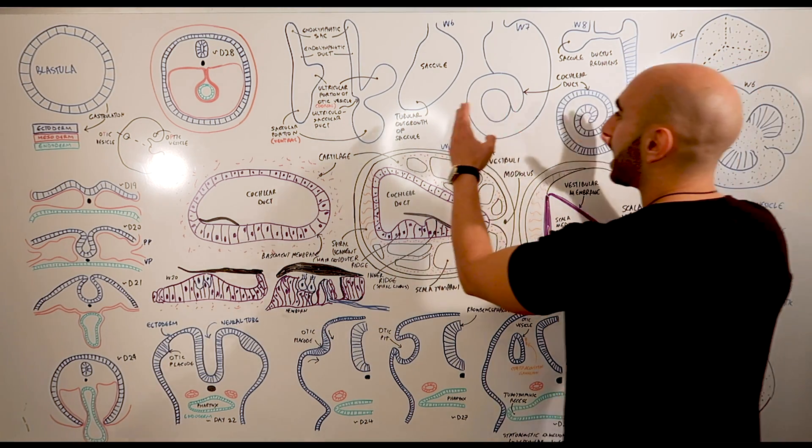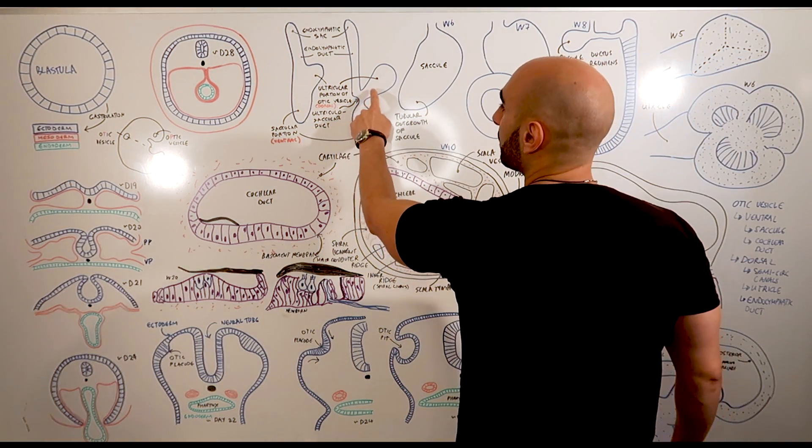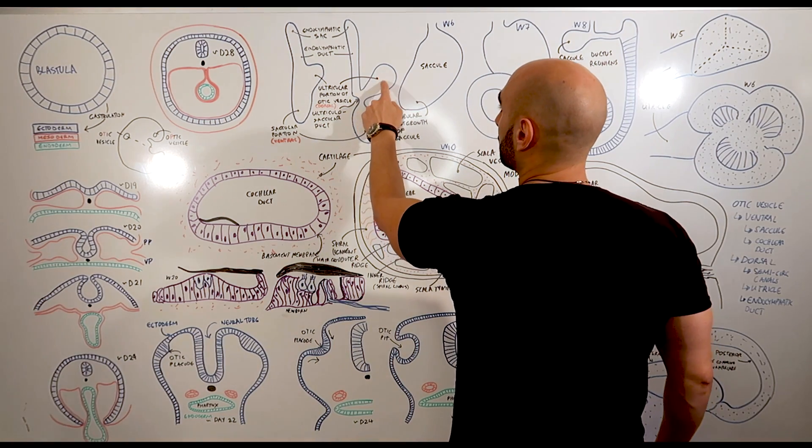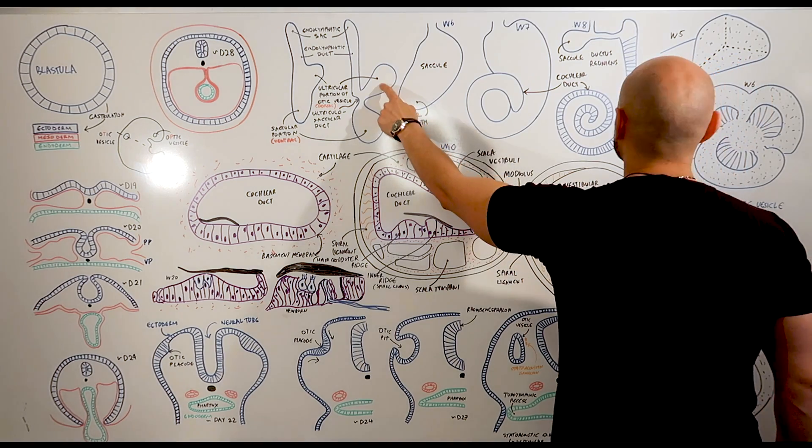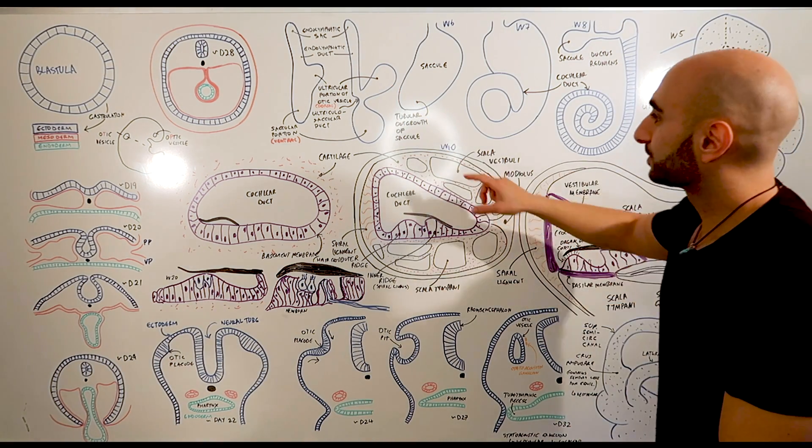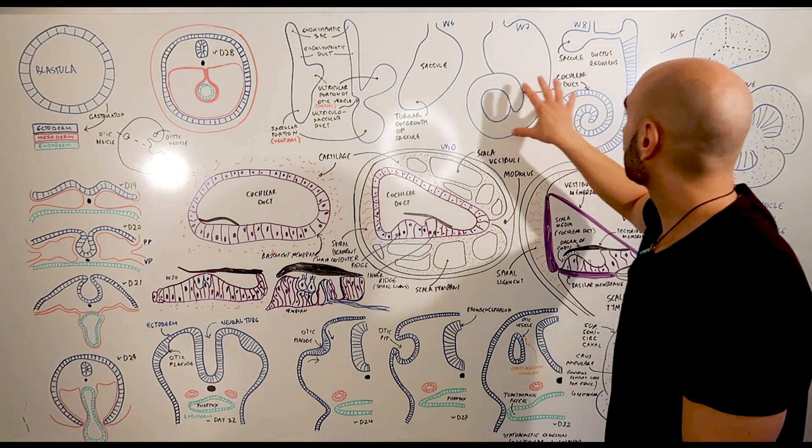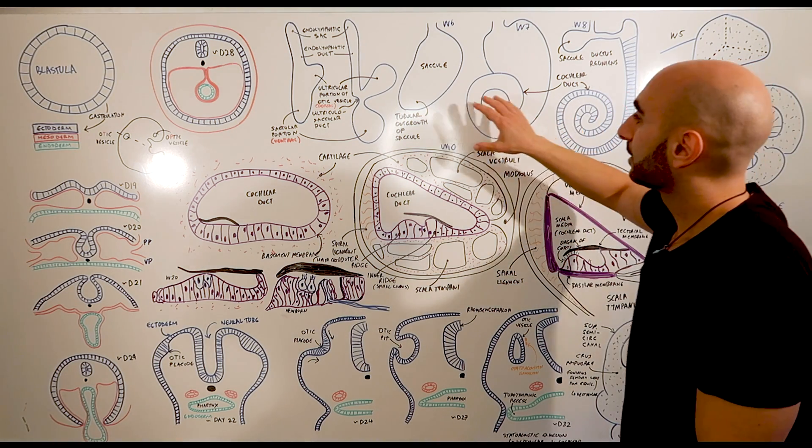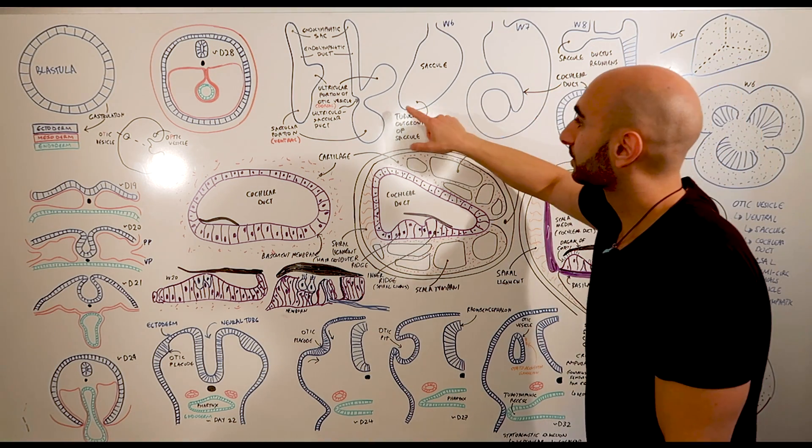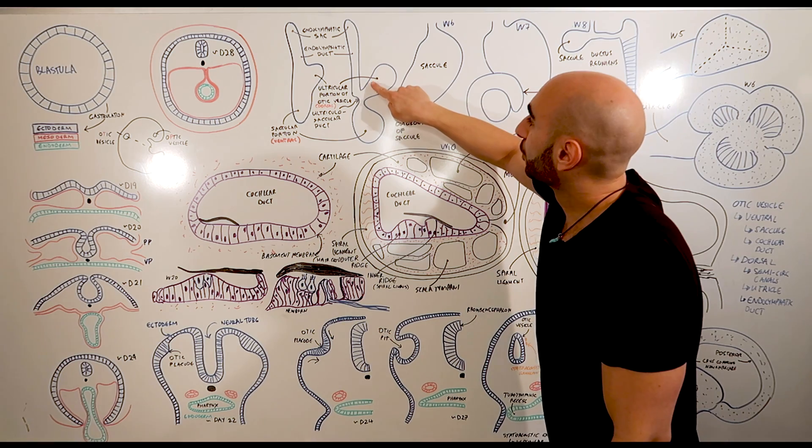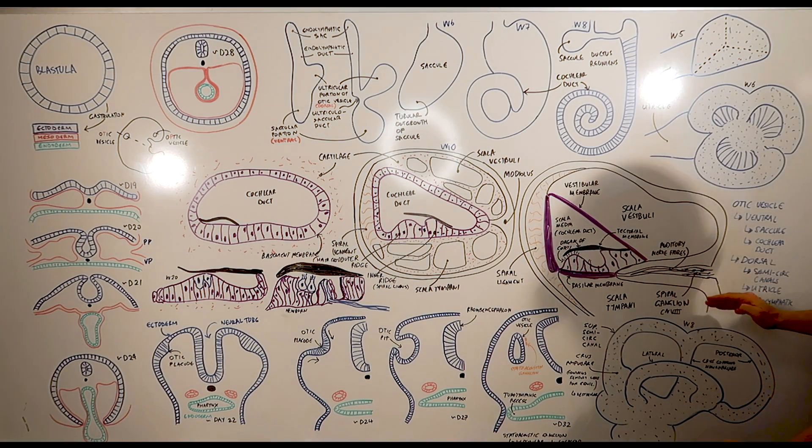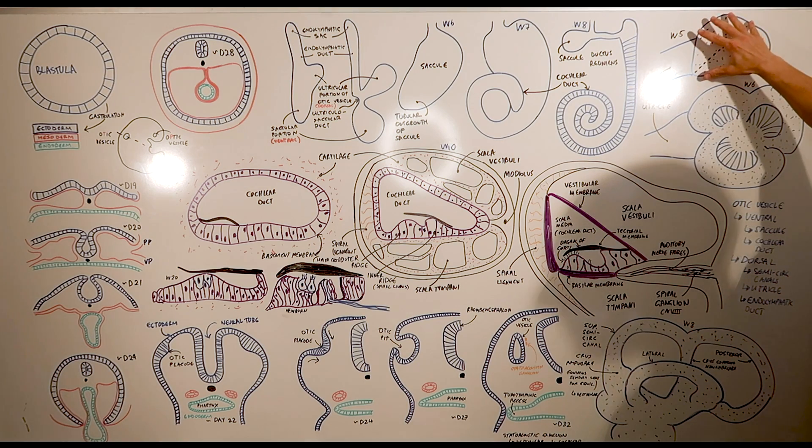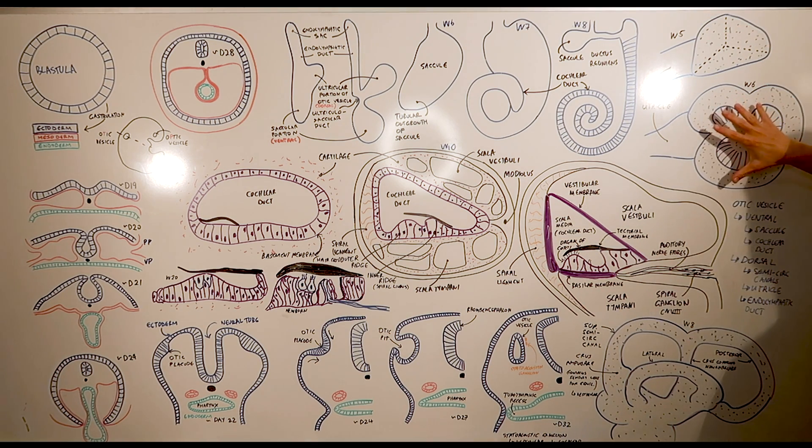So now let's talk about the dorsal growth of the otic vesicle. Where we spoke about the ventral being the cochlear duct as well as the saccule, the dorsal part will become the semicircular canals. Step one, step two, step three.